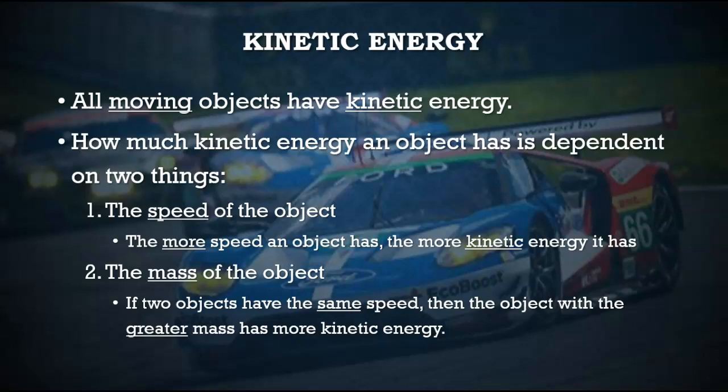Mass and speed both affect kinetic energy, though to different amounts. For example, if you have a car and a tractor trailer truck both going 50 miles an hour, the tractor trailer truck is going to have more kinetic energy because it has a greater mass — it is heavier than the car.